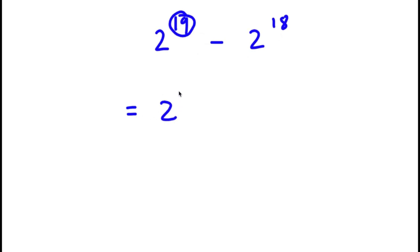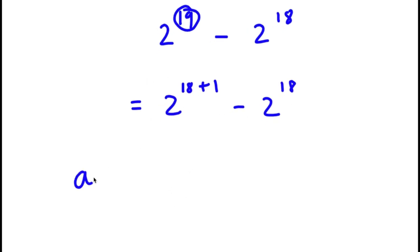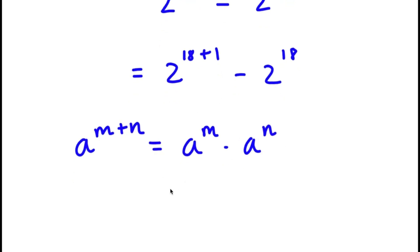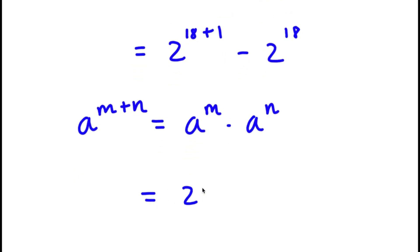So now I have 2 to the power of 18 plus 1 minus 2 to the power of 18. If I have something in the form a to the power of m plus n, this is simply equal to a to the power of m times a to the power of n. So 2 to the power of 18 plus 1, I'm going to write that as 2 to the power of 18 times 2 to the power of 1.